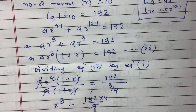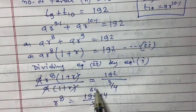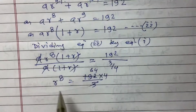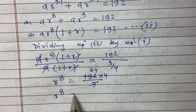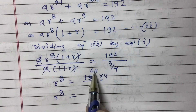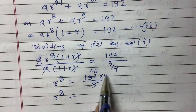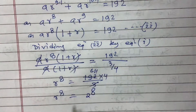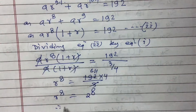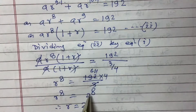So r⁸ = 256. Now 256 equals 2 to the power 8, so r⁸ = 2⁸, therefore r = 2.